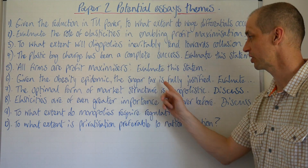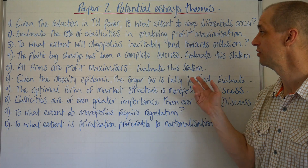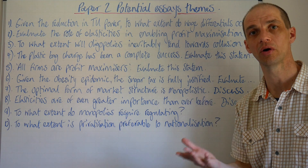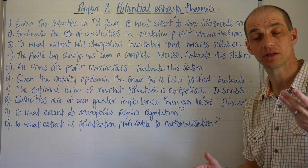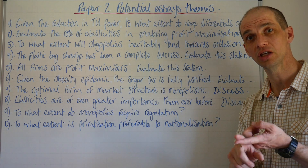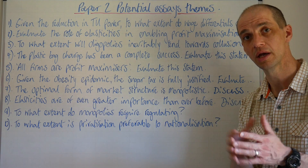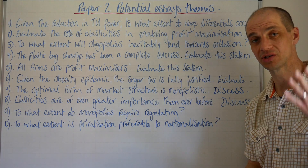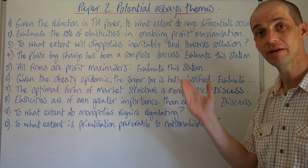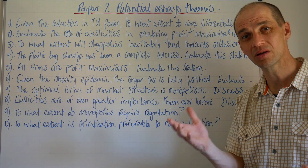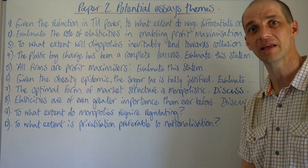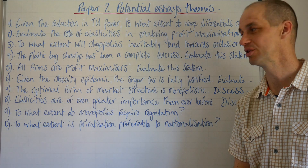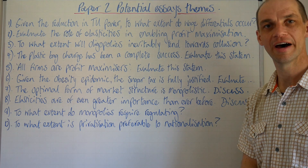Number six: given the obesity epidemic, the sugar tax is fully justified — evaluate this statement. There are a lot of similarities with the plastic bag charge. Government intervention is highly imperfect. When it comes to the sugar tax, Coca-Cola used it as an opportunity to reduce bottle size and increase price substantially above the actual tax threshold. Other manufacturers simply changed their recipes — but is that what consumers wanted, and does it maximise their economic welfare? Do we need a nanny state? These taxes are also regressive.